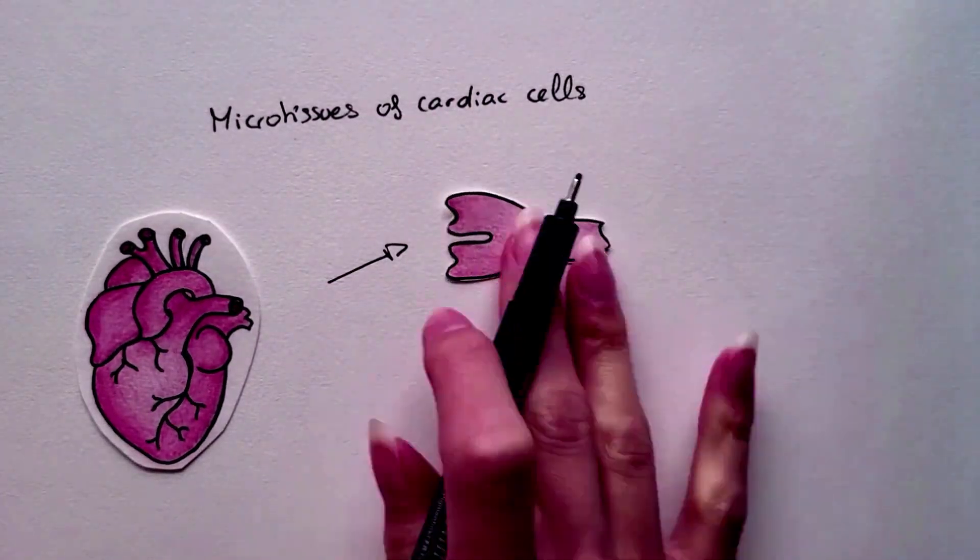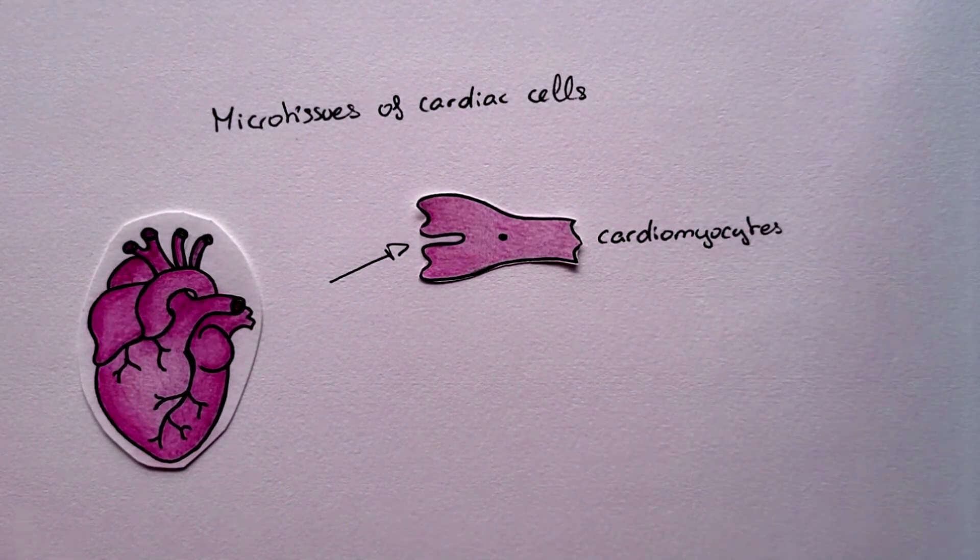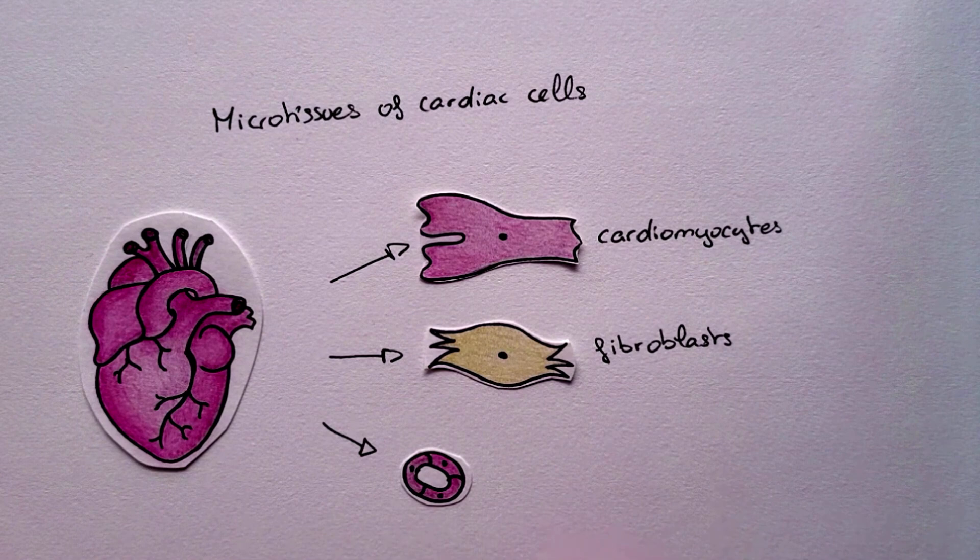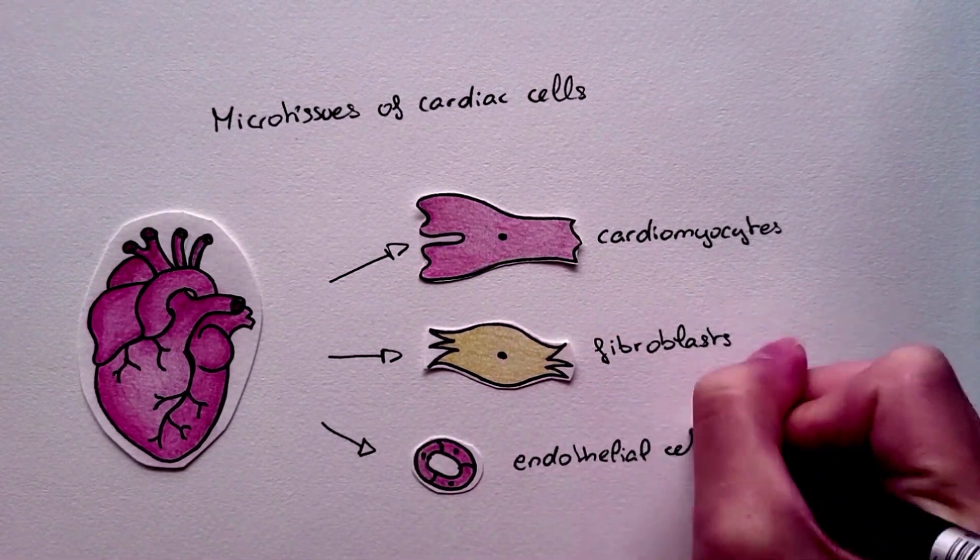Inside the chip, we have microtissues. Here it is cardiomyocytes, the heart cells, cardiac fibroblasts for the extracellular matrix, and endothelial cells for the blood vessels.